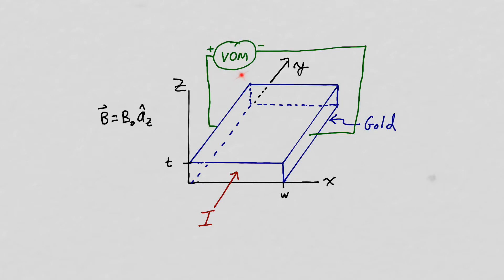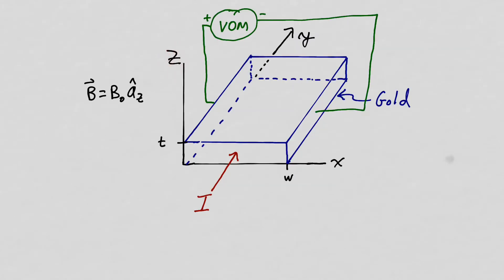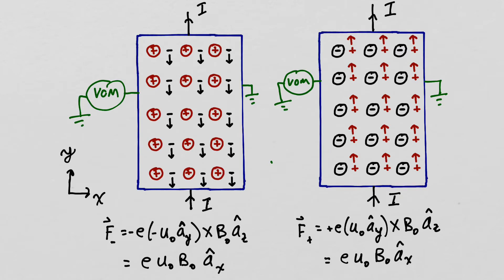The sign of this voltage will tell us if the current is due to positive charges flowing in the Y direction or negative charges flowing in the minus Y direction. Looking down onto the piece of gold from the positive Z direction, let's first look at the situation where the conduction charges are negative. A current flowing in the plus Y direction results from these negative conduction charges moving in the minus Y direction, with velocity U sub zero in the minus Y direction. We'll call the magnitude of the charge E, so the charge of a negative conduction charge is minus E.